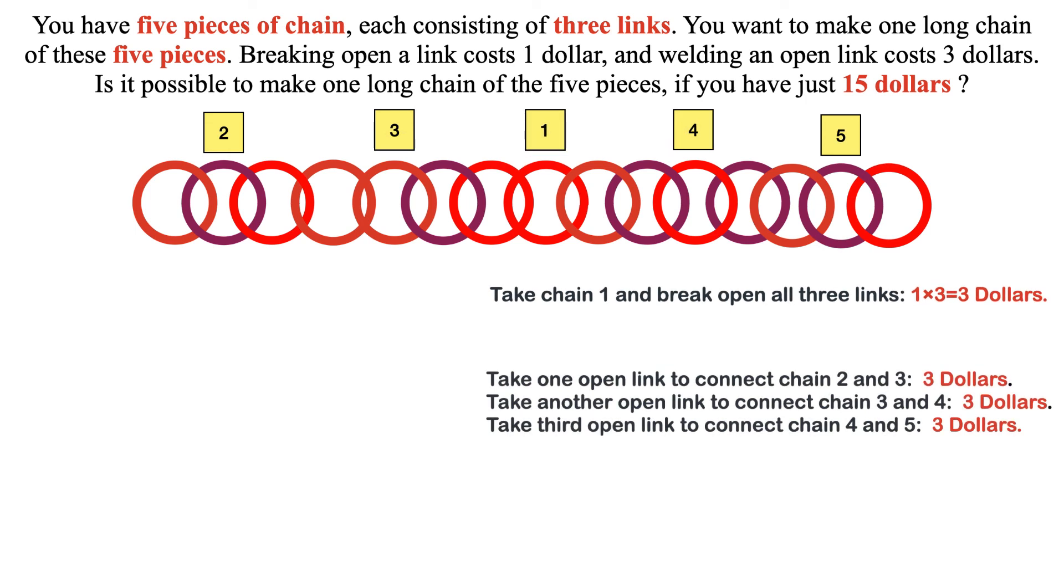Adding all, it will cost $12. Now you have one long chain ready in only $12. By following this logical approach, we can create a longer chain using 5 smaller chains with 3 links each, investing just $12.